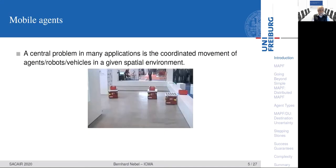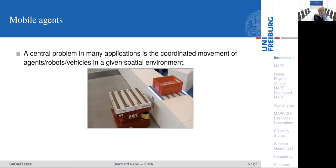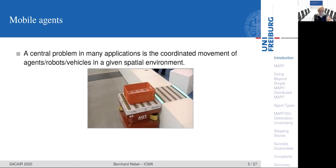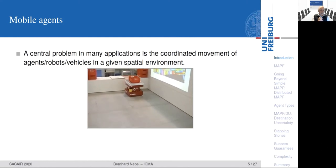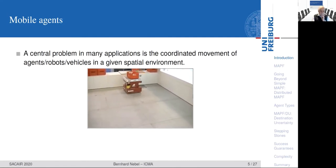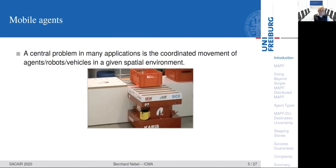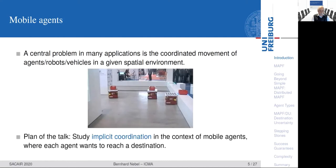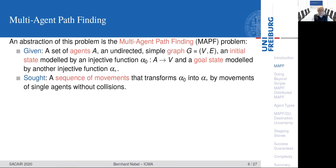We will study this in a more simplified environment, namely when we just have mobile agents. Mobile agents come up very naturally in many applications where you have to implement coordinated movements of robots or vehicles. Here we see an example of logistics robots, and one of the main things is that they don't collide. The plan of the talk is to study this implicit coordination technique in the context of mobile agents where each agent wants to reach a destination. This problem — having a set of mobile agents each wanting to reach a destination — is what is also called multi-agent pathfinding.